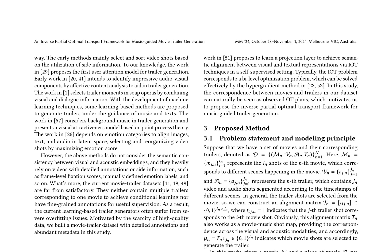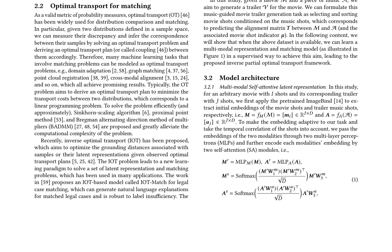Optimal transport, OT, is introduced as a valid metric for distribution comparison and matching, widely used in machine learning tasks such as domain adaptation, graph matching, and cross-modal alignment. Inverse optimal transport, IOT, aims to optimize the grounding distances associated with samples or their latent representations given observed optimal transport plans. The proposed music-guided movie trailer generation method formulates the task as selecting and sorting movie shots conditioned on the music shots, corresponding to predicting an alignment matrix between the movie and music shots. A multimodal representation and matching model is introduced, learning to predict the alignment matrix in a supervised way.